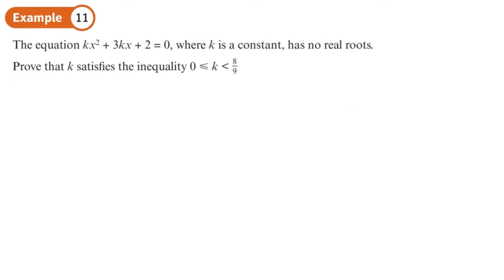We're going to prove that this equation here has no real roots. The thing to remember: no real roots means that the discriminant is less than 0. Let's work out the discriminant of this quadratic. A is k, b is 3k, c is 2.